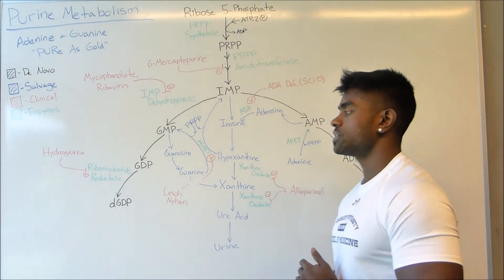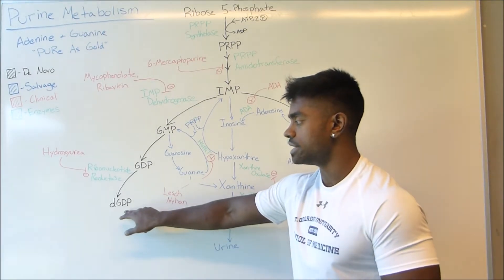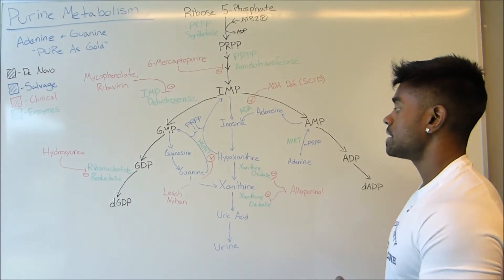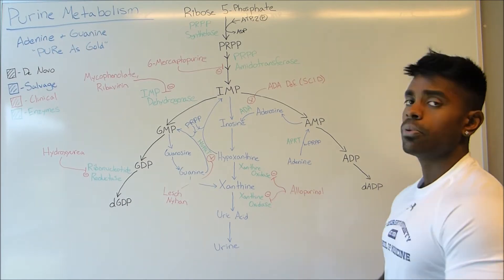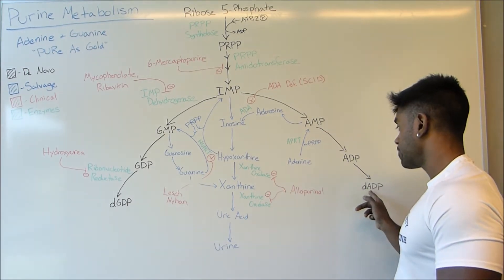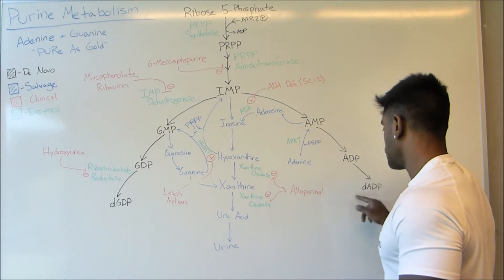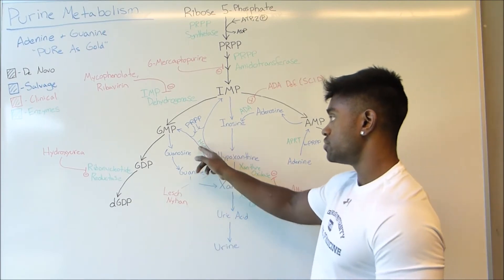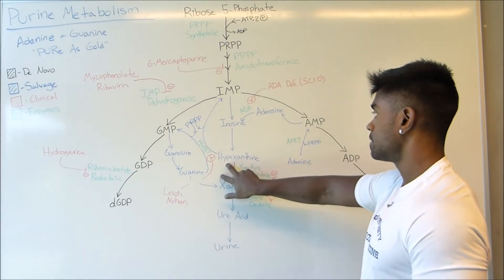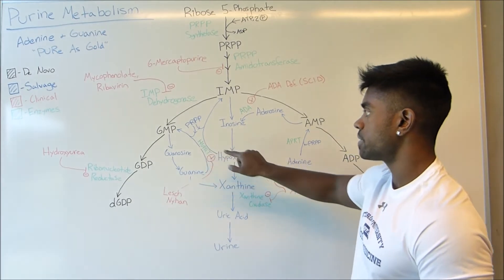Now I want to talk about how these purines, once they break down, can be salvaged in order to form dGDPs and dADPs again to incorporate themselves into DNA. There are two enzymes that are very important. The first enzyme is APRT, which takes the breakdown product of ADP — which is adenine — and uses PRPP in order to form AMP, which can then go back and form dADP. The next enzyme is HGPRT, which has two roles: it takes guanine and also hypoxanthine and uses PRPP in order to go back and form GMP and IMP.